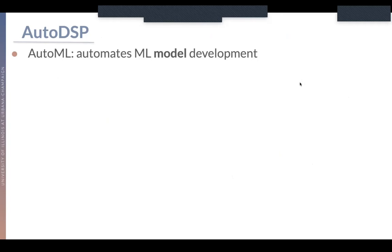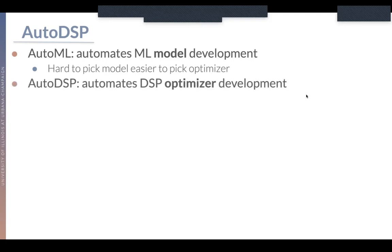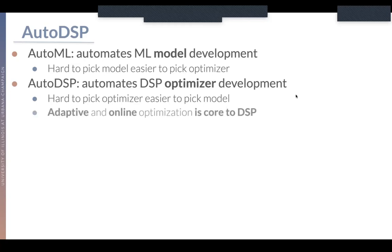We call this approach Auto-DSP. We're inspired by AutoML — the idea that you can automate machine learning model development. In machine learning, it's typically very difficult to pick which model to use, whereas it's easier to pick which optimizer to use. For example, it's difficult to pick a deep learning model architecture, but you can often use an optimizer like Adam and get good performance. In Auto-DSP, we're looking to automate DSP optimizer development, because for DSP problems it's typically very difficult to pick which optimizer to use, as the same optimizer can lead to solutions for different tasks. For example, using a simple linear filter you could produce beamformers, dereverberators, and source separators. We focus on adaptive and online optimization, since those are core problems to DSP.